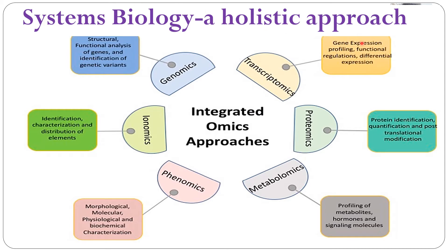Systems biology is actually a holistic approach. We cannot say that everything is about chromosomes or everything is about genes. When we study the genes, we know that only a small part of the entire DNA codes for proteins. All the products of genes — the products of RNA, proteome, metabolome, phenome, and ionome — together form the complete integrated omics, which helps us relate to different processes going on in an organism.